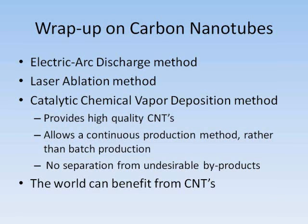Out of the three most efficient methods of carbon nanotube synthesis discussed, the catalytic chemical vapor deposition method is by far the best. It allows a continuous process rather than batch processes like the first two methods, which also require separation of carbon nanotubes from byproducts after each batch. CCVD allows a steady production rate of CNTs and gives much higher yields, cutting down on production costs and making it less expensive to incorporate CNTs into applications that could greatly benefit from them.